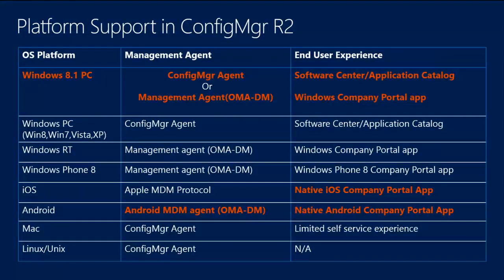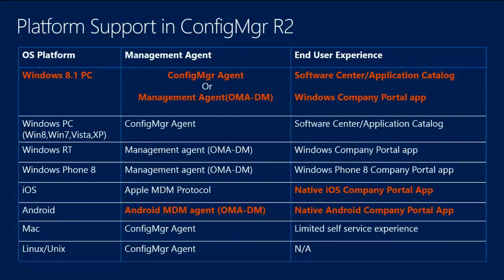In the keynote, Molly Brown demoed the company portal with a nice modern app-style interface for self-service. Moving further down the slide, in the management agent column, Android is also highlighted. Currently with SP1, we manage Android via Exchange ActiveSync policy through the Exchange connector. With the R2 release, we're going to have a full management agent for Android devices, providing a deeper level of management and better reporting and compliance information. Company portal apps will be available for iOS and Android, covered in more detail in this afternoon's app deployment session.